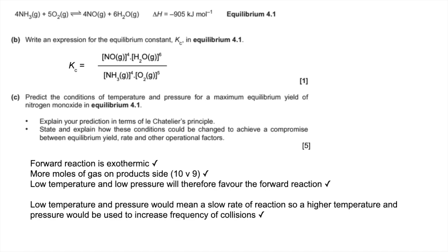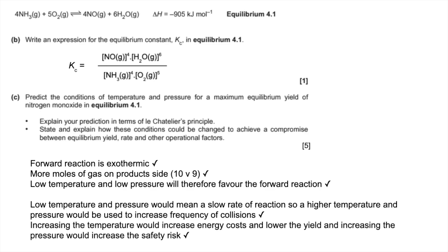Finally, any other operational factors would need to consider that increasing the temperature is going to increase the energy costs and it's going to lower the yield—it's going to favor the reverse reaction. Similarly with the increased pressure, increasing the pressure would increase a safety risk. High pressures are more dangerous operational conditions to work in.